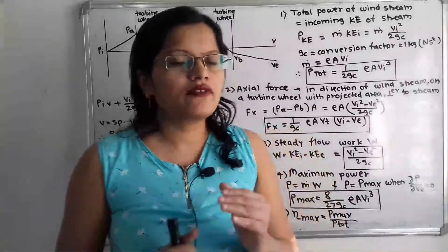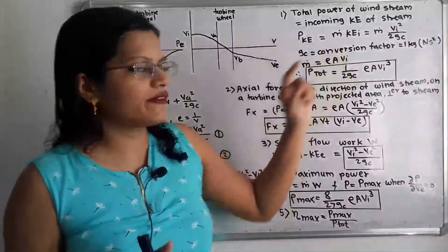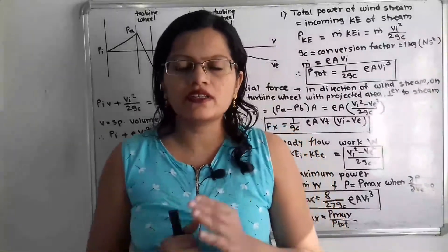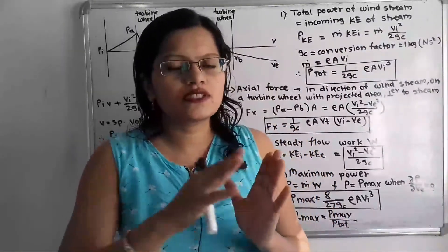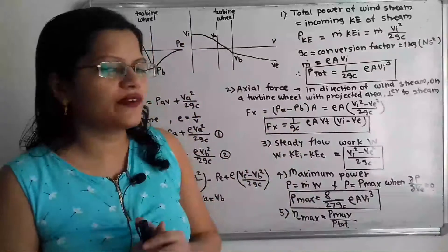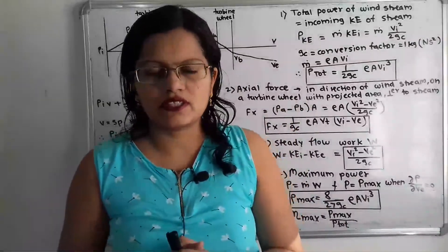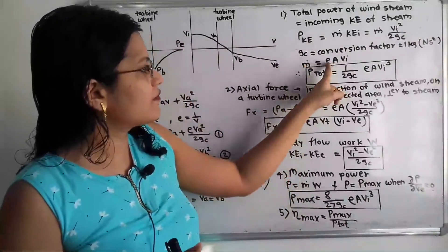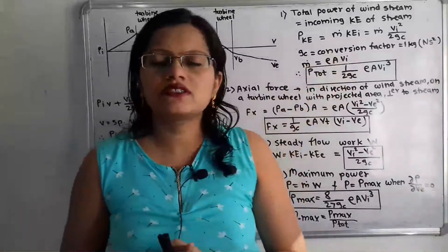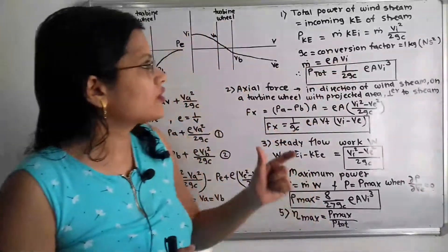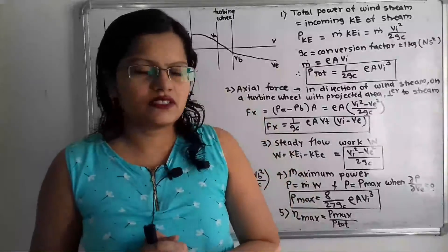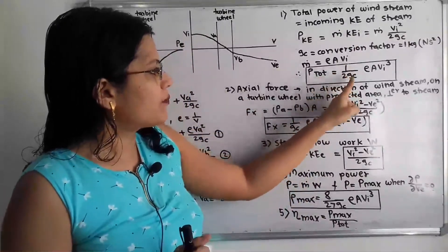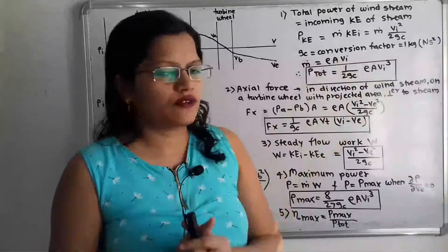The mass flow rate of air is: m-dot = ρ·A·vi, where ρ is the density of air, A is the area through which the wind passes, and vi is the incoming velocity. Substituting m-dot into the formula, the total power of the wind stream is: P_total = (1 / 2gc) · ρ · A · vi³.